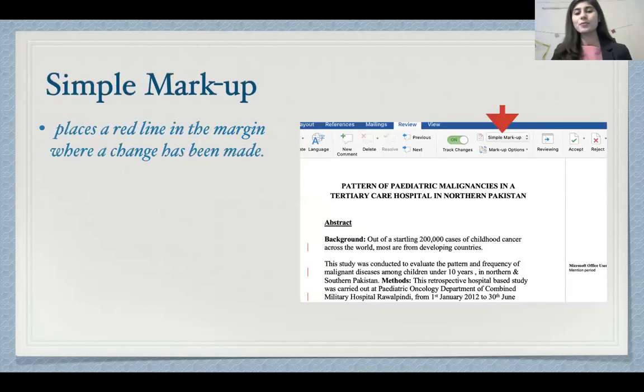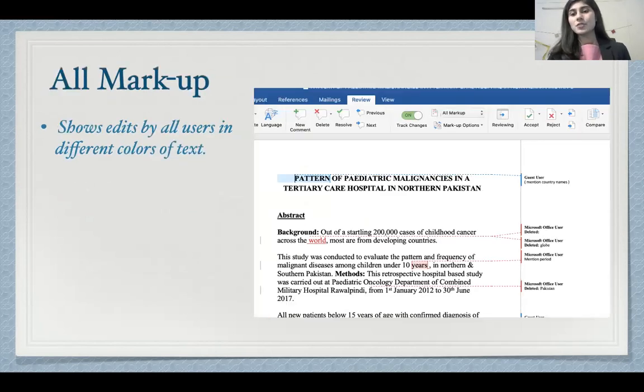There's also a simple markup option which puts a red line in the margin exactly where a change has been made. And the last one is the all markup option. This is the most detailed among all of these, and it will show you all the edits made by all the different people.